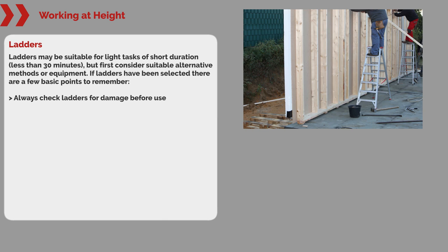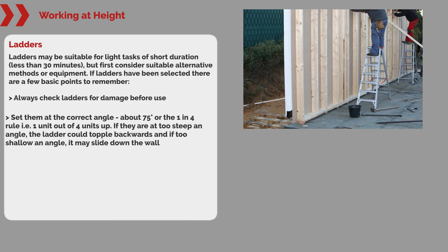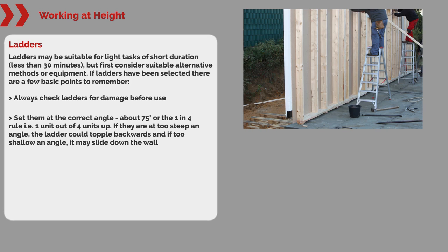Always check ladders for damage before use. Set up at the correct angle — about 75 degrees, or the 1-in-4 rule. In other words, 1 unit out for every 4 units up. If they are at too steep an angle, the ladder could topple backwards, and if too shallow an angle, it may slide down the wall.